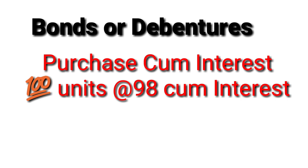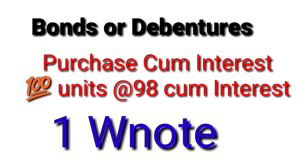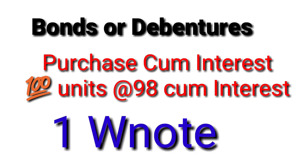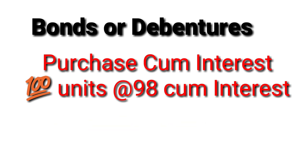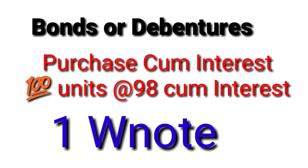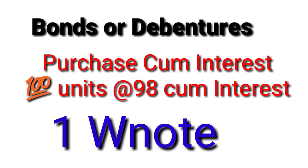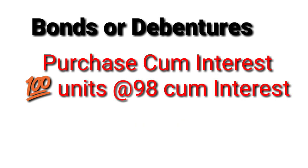For a cum-interest purchase, one working note is required. For example, 100 units purchased at rate 98 gives 9,800. However, because the price includes interest, you must deduct the interest component from that value. This is because the 100 units at 98 rate will carry interest within the price, so you subtract the interest to isolate the actual cost of the investment.